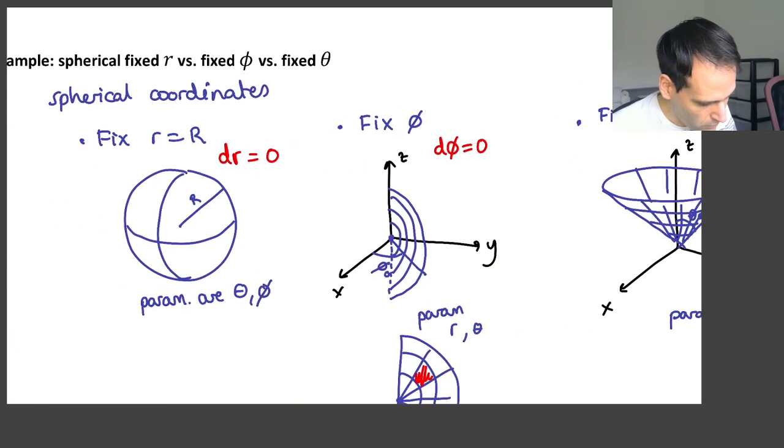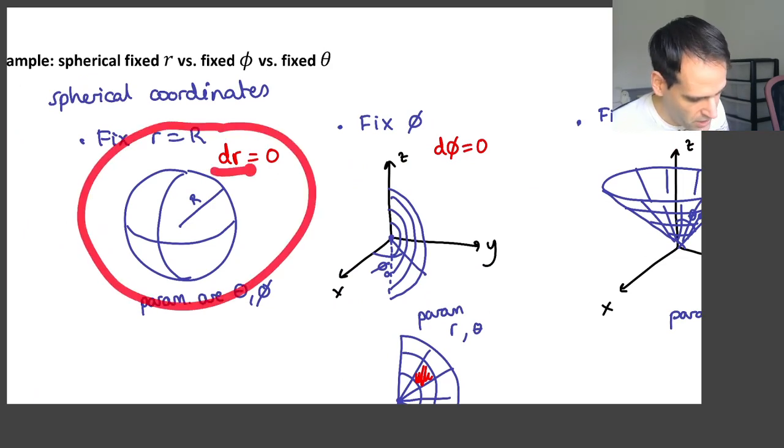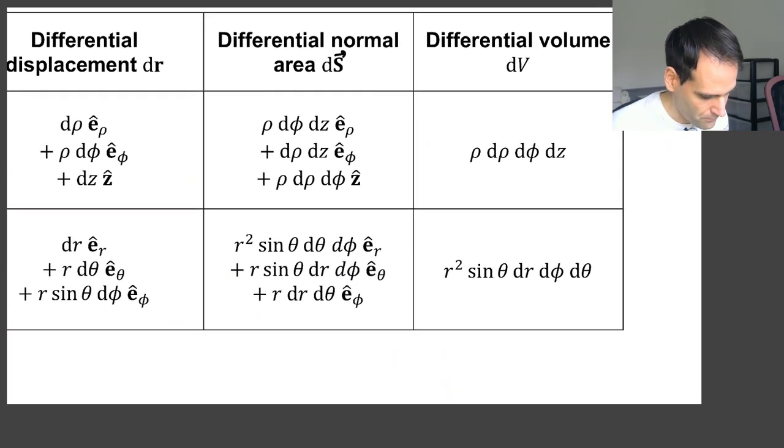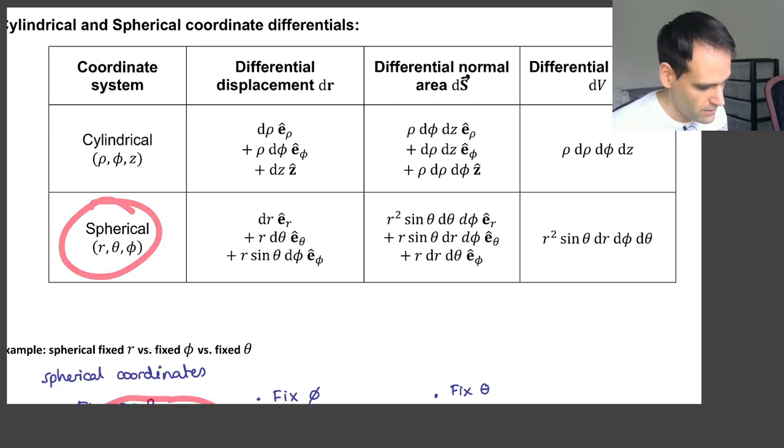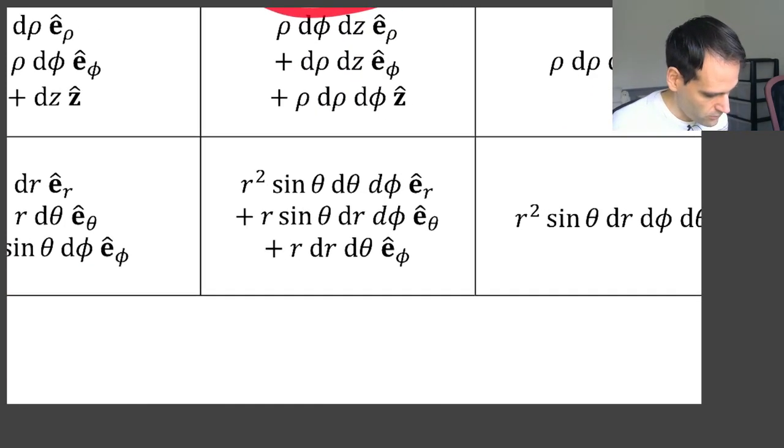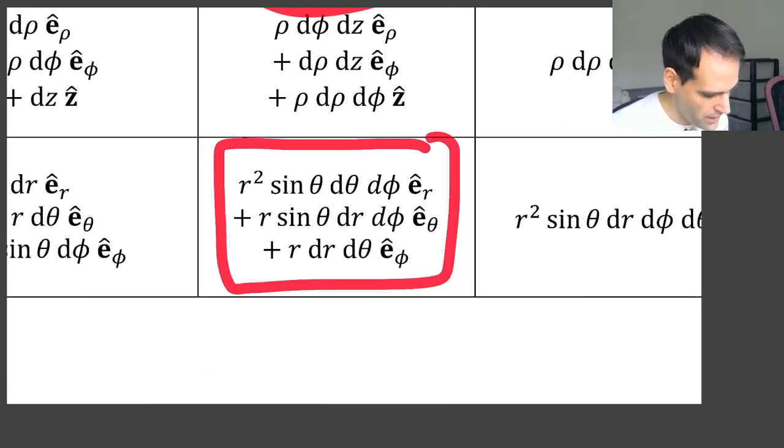So let's focus, for example, on the case of the surface of a sphere. dr equals 0. So we come here. We look at spherical coordinates. dS. So we look at this. And then we say, okay, dr is 0.